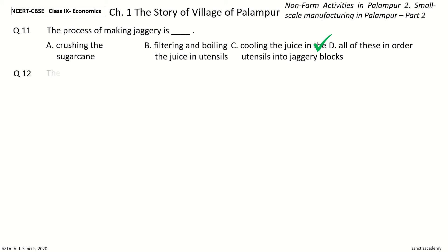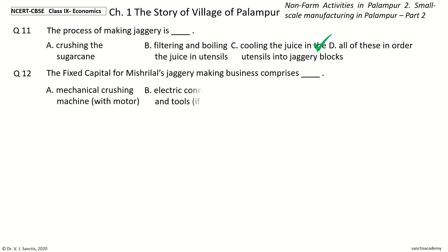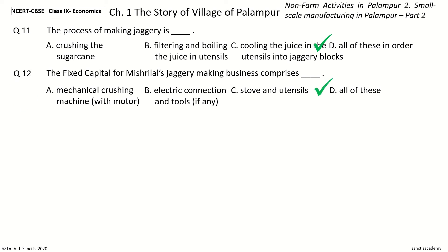Question 12: The fixed capital for Mishrilal's Jogari making business comprises dash. The options are Mechanical crushing machine with motor; Electrical connection and tools, if any; Stove and utensils; All of these. The answer is All of these. So the fixed capital comprises: Mechanical crushing machine with motor, Electrical connection and tools if any, and Stove and utensils.